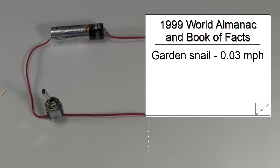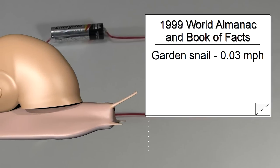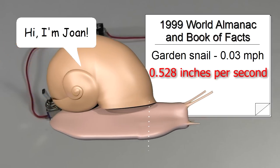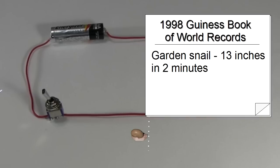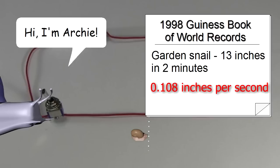According to the 1999 World Almanac and Book of Facts, a garden snail can move at a whopping 0.03 miles per hour. That's 0.528 inches per second. We'll call her Joan. The 1998 Guinness Book of World Records says that a garden snail named Archie went 13 inches in two minutes. That's 0.108 inches per second. This is Archie.